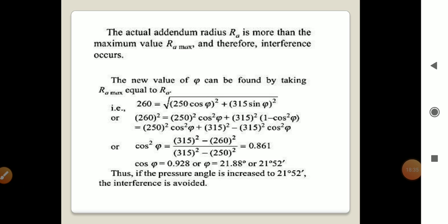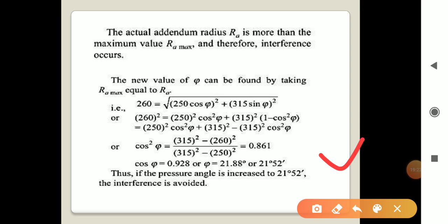Putting values into the calculator: cos²φ = 0.861. Taking the square root: cos φ = 0.928. Therefore φ = cos⁻¹(0.928) = 21.88 degrees, or equivalently 21 degrees 52 minutes.